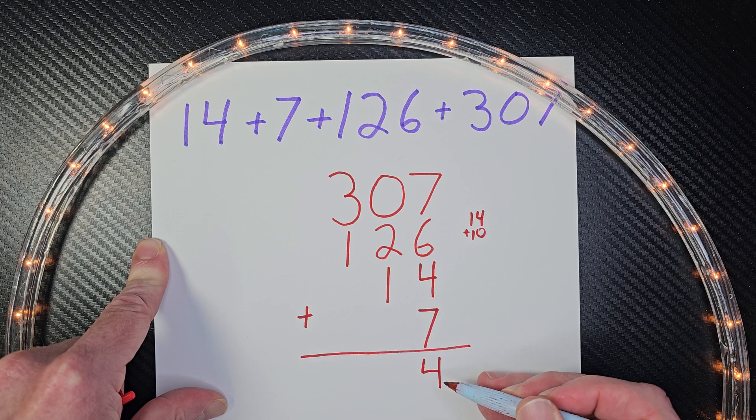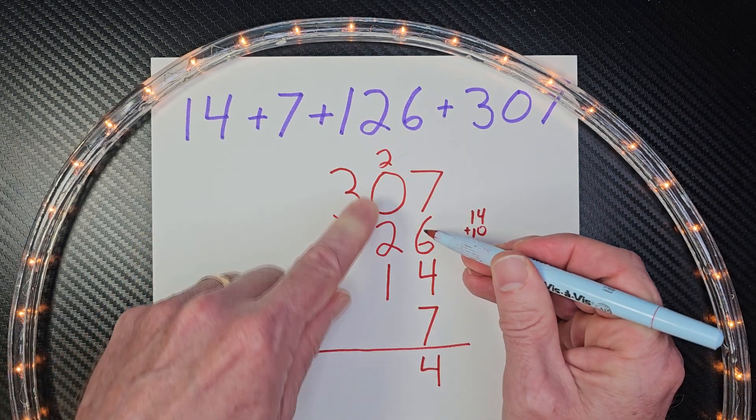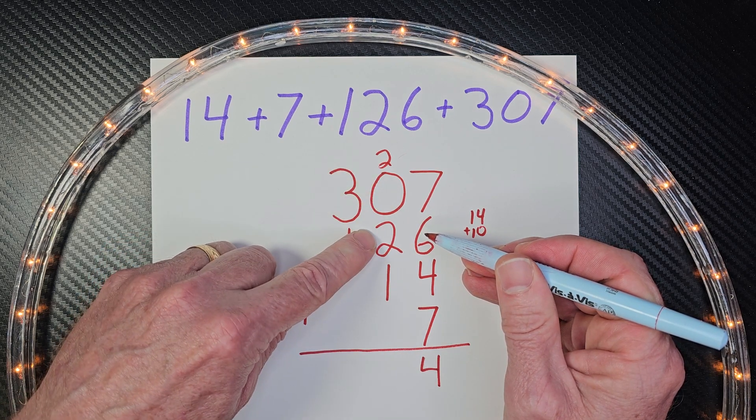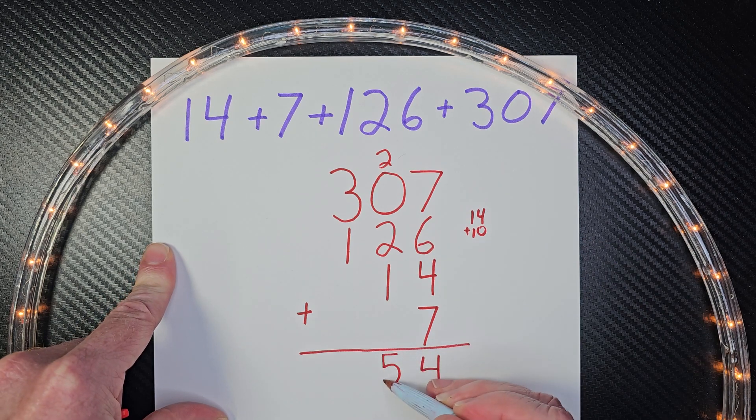I put the 4 right here, carry the 2, and put it over here. Then I go ahead and add my tens. So, that would be 2 plus 2 is 4 plus the 1 is 5. Put the 5 here.